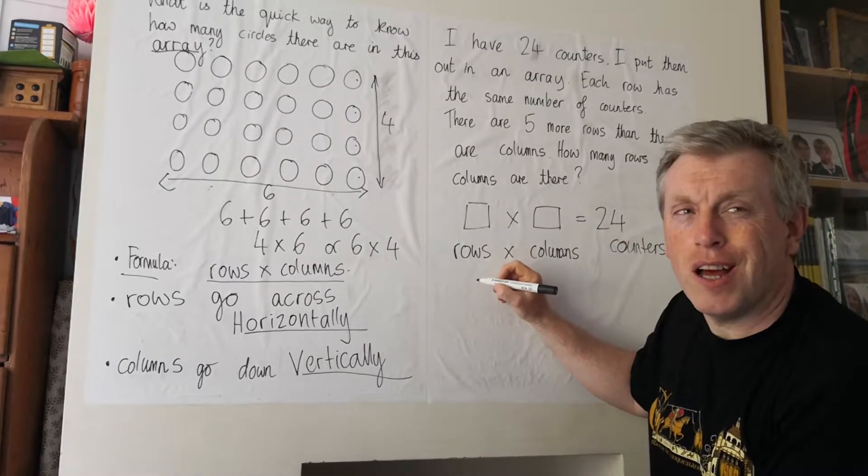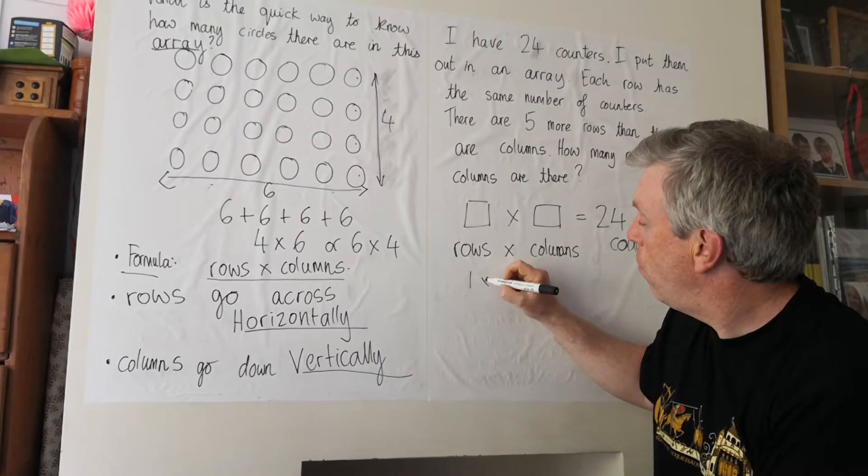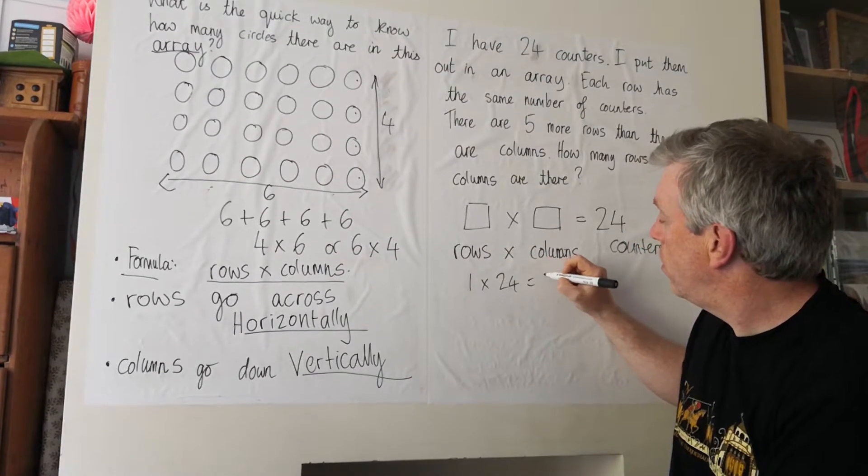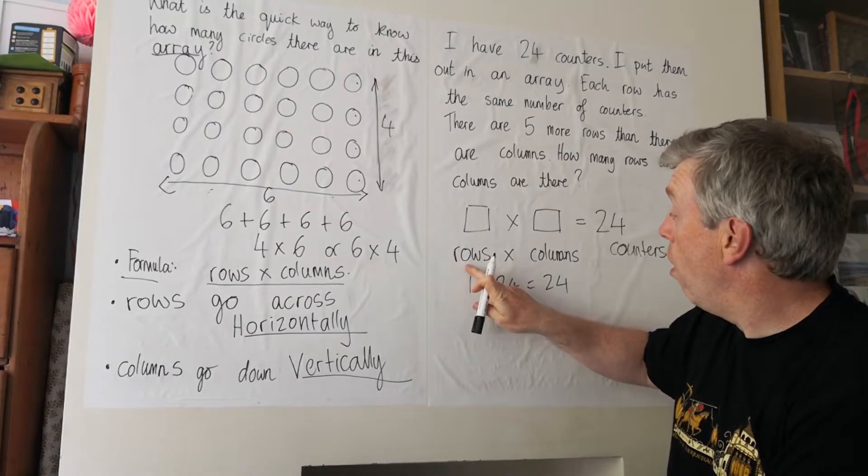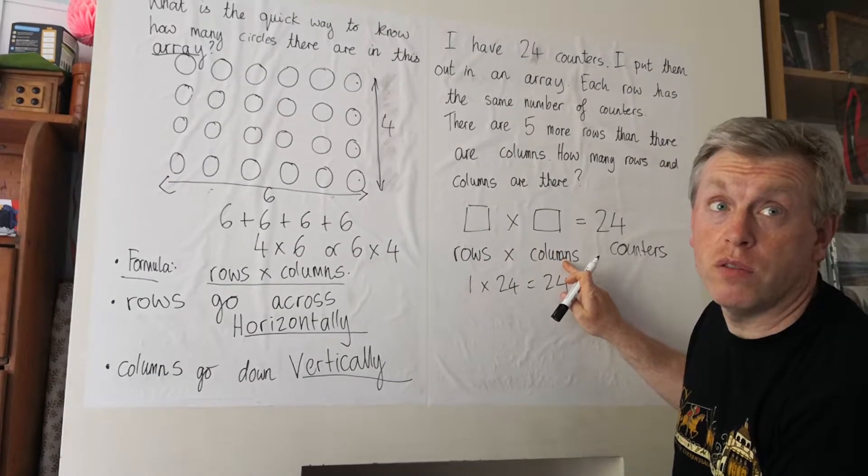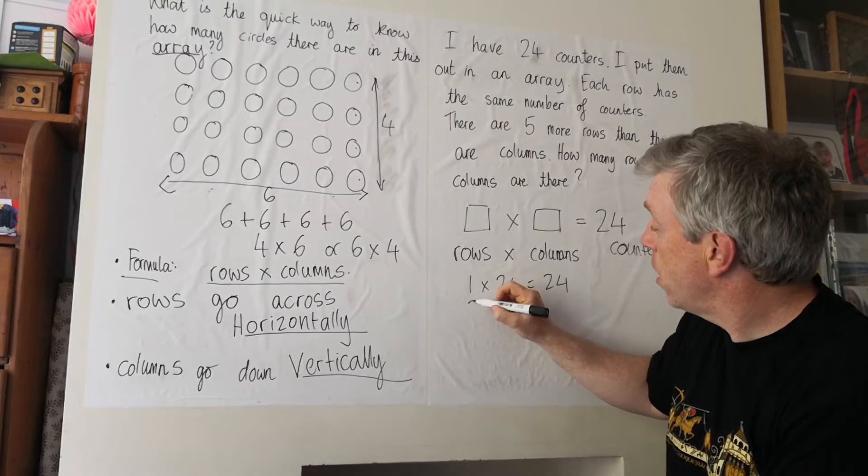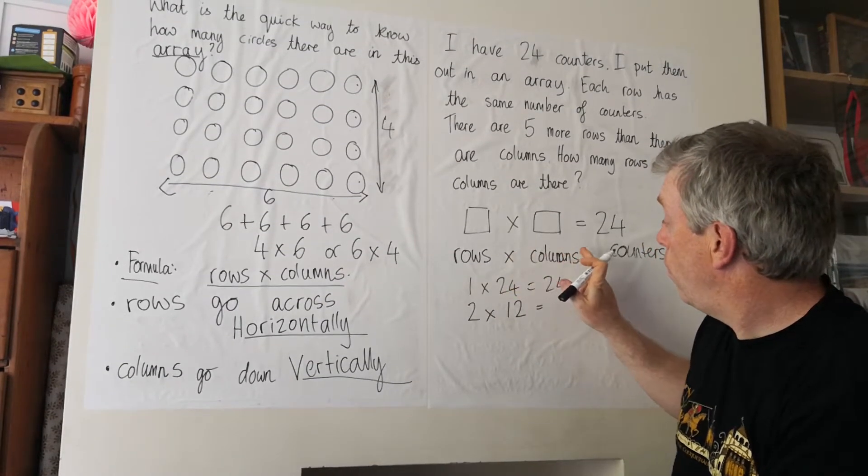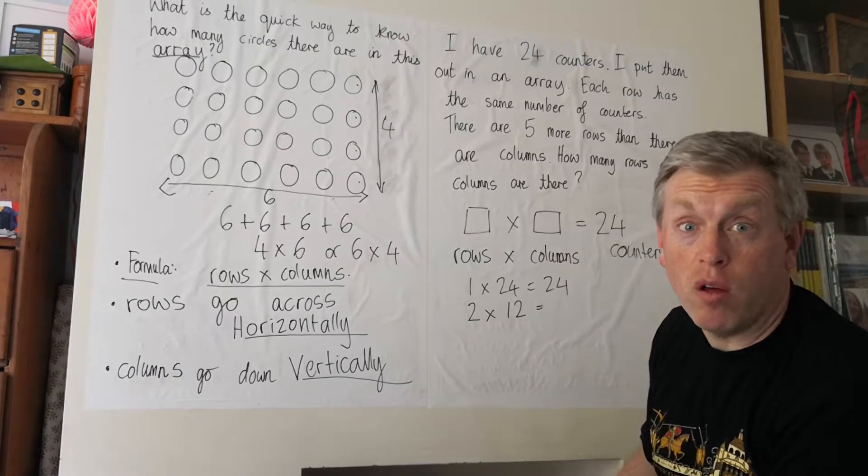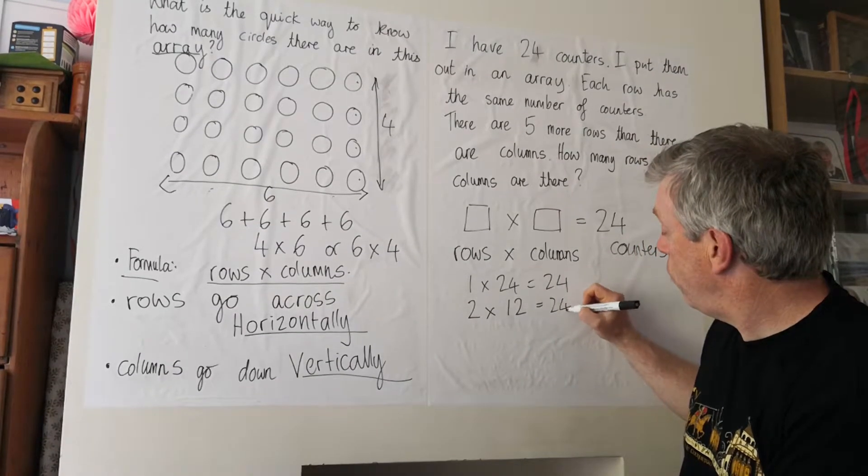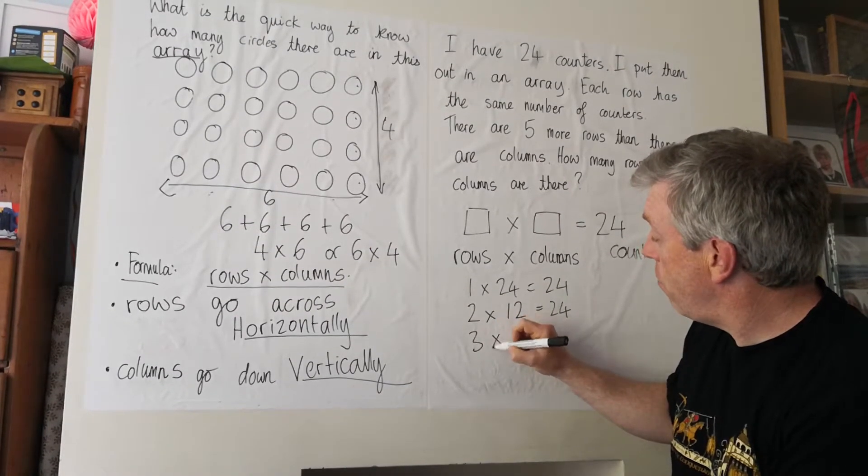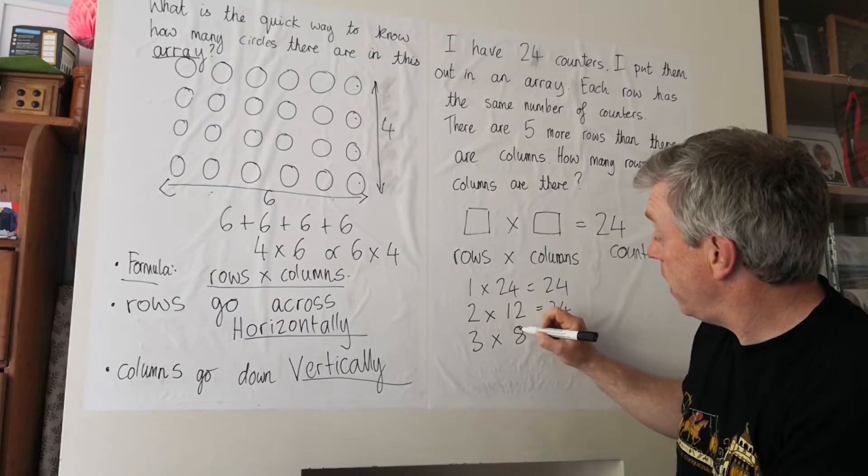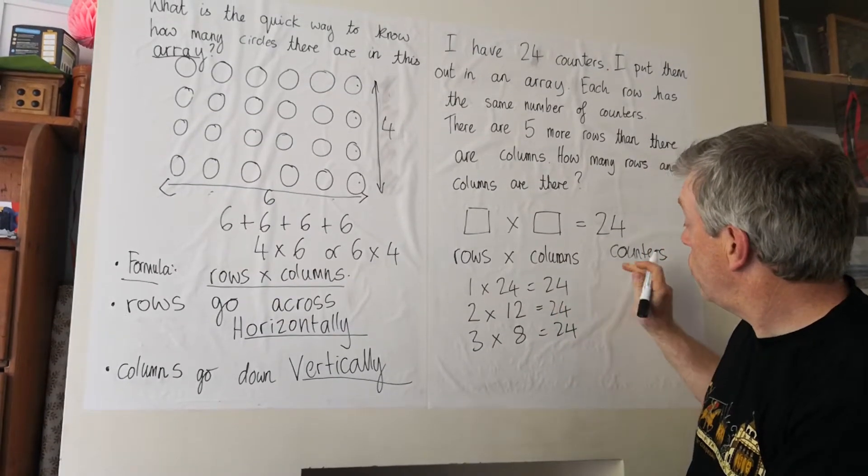Well, we can use our times tables, can't we? One times 24. One row. Twenty-four columns. Twenty-four. Two rows. Twelve columns. Twenty-four. Three rows. Eight columns. Twenty-four.